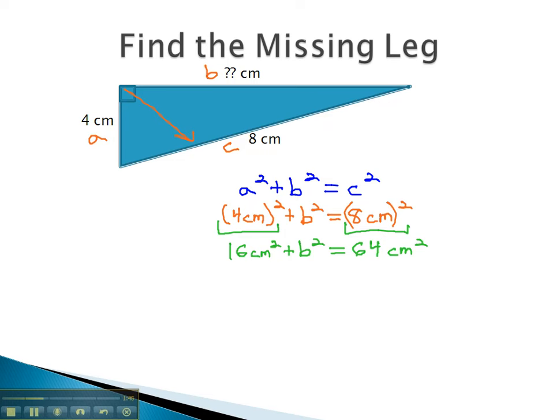A common error is at this point, students take the square root of both sides, and we need to be careful to never take the square root until the very last step. What we need to do is first isolate the x squared. We need to get rid of these 16 square centimeters, and we can do that by subtracting 16 square centimeters from both sides. When we do that, we get b squared equals 64 minus 16 is 48 square centimeters.